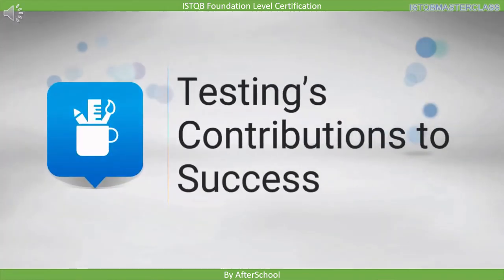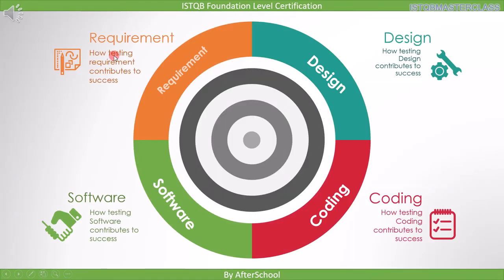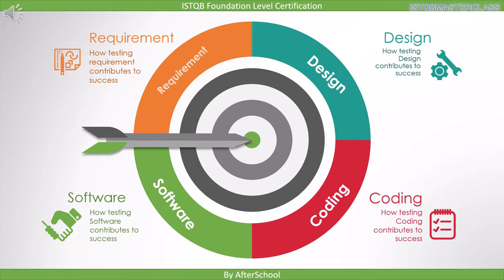The first topic under this section is testing's contribution to success, where we will see how testing at different levels contributes to success. The different levels of the software development cycle are the requirement level, where software requirements are written, the design level, where design is made, and the coding level, where code is implemented. Finally, the completed software is ready for testing. With an example, we will understand how testing at these levels contributes to the success of the overall product.